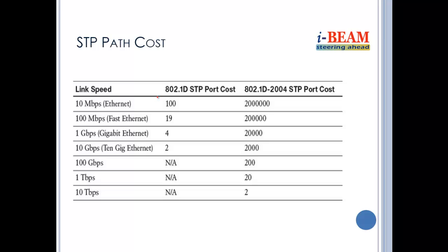In spanning tree, you can see the root cost calculation. In STP, you can see the root cost. The cost depends on the speed of the link.